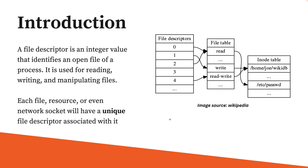That is not something we are going to discuss in this video. But as you can see, all these file descriptor values are associated with a file table with read, write, or read-write operation permissions, and this is in turn associated with an inode table, which shows the exact path from where the process can access the particular file. This is how the file descriptor is going to look.